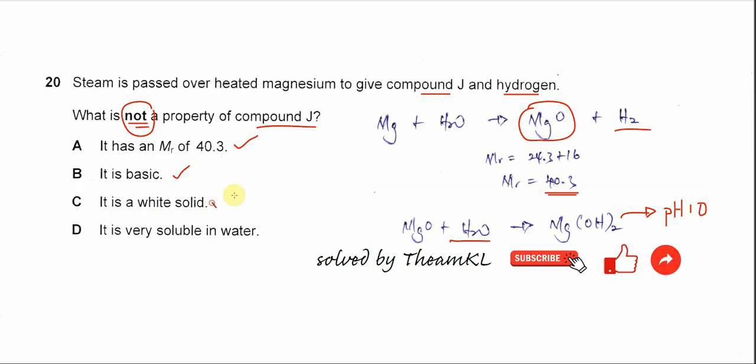Option D: it is very soluble in water. Wrong. Magnesium oxide forms magnesium hydroxide, which is partially soluble in water. We cannot say it's very soluble. If it's very soluble, it will form a clear solution like barium hydroxide. Therefore, the answer is D.